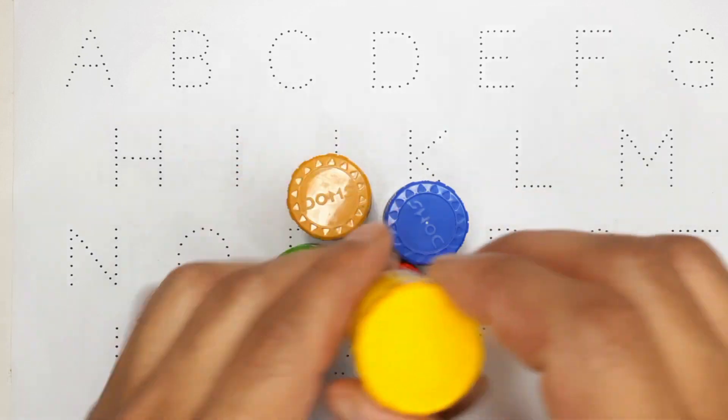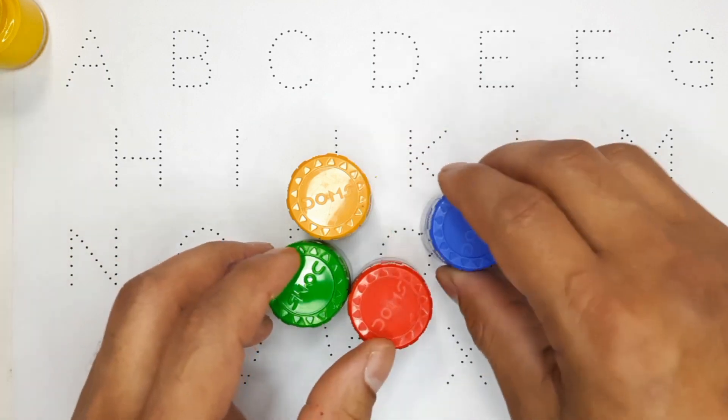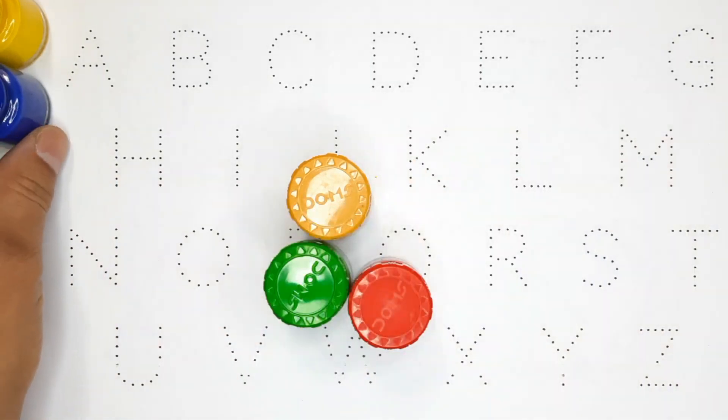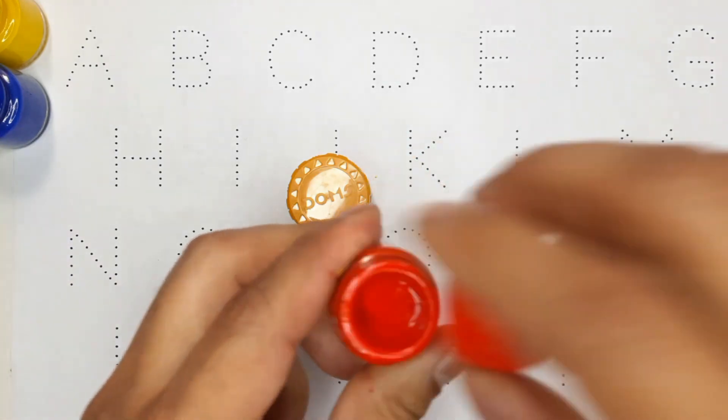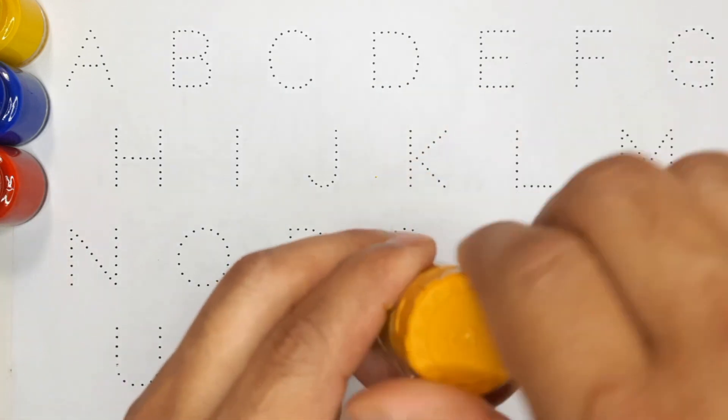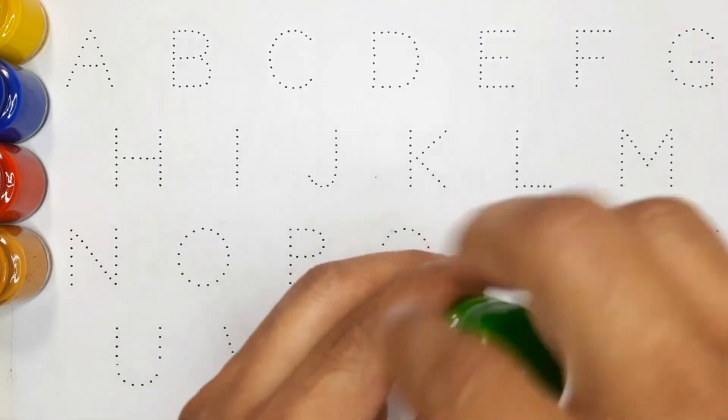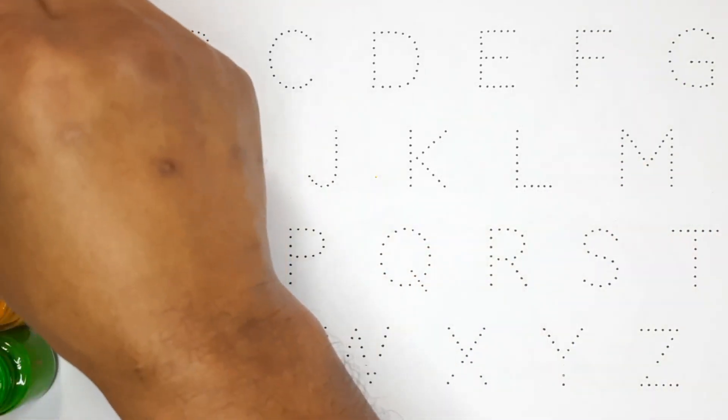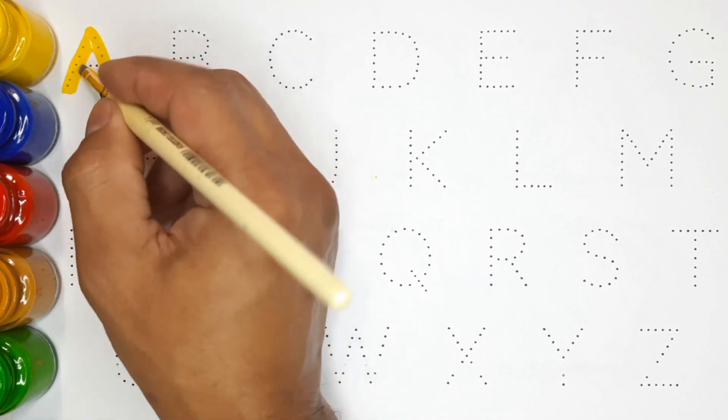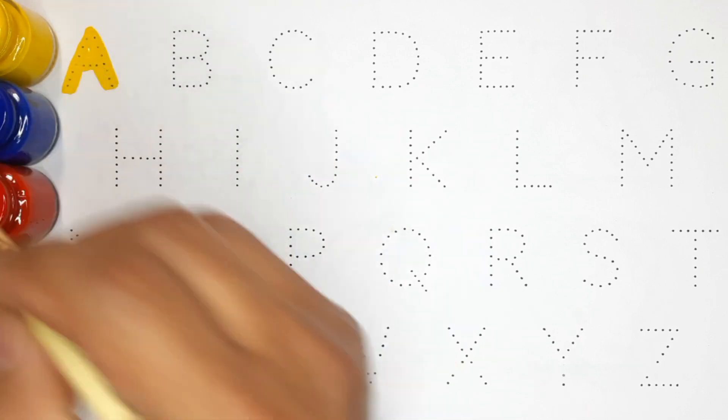Yellow color, blue color, red color, orange color, green color. A, A for apple, A for apple.